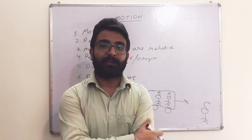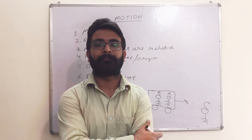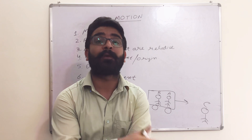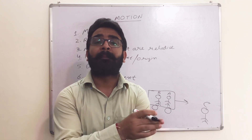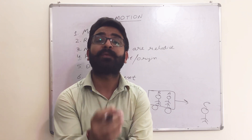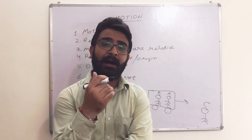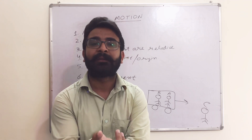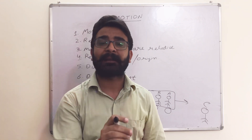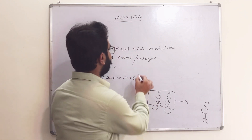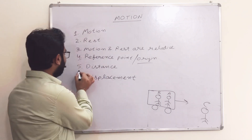The next point is the reference point. To define any kind of motion, you need a reference point. For example, if I say my house is five kilometers away — five kilometers from where? From school, from a bus stand, from a railway station? If I say my house is five kilometers from school, then school is the reference point. This reference point is also known as the origin.